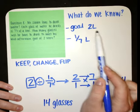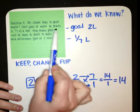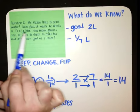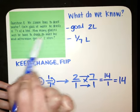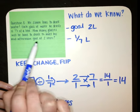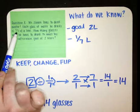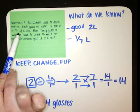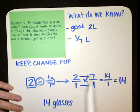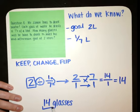Let's go back and make sure that makes sense. Each glass of water he drinks is one seventh of a liter. How many glasses will he have to drink to meet his mid-afternoon goal of two liters? Well, if each glass is one seventh, I know it's going to take seven glasses to make one liter. So would it make sense that it would take 14 glasses to make two liters?